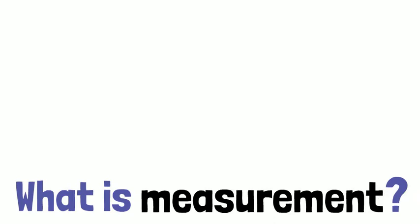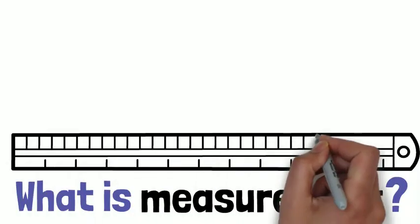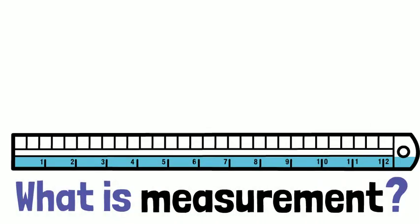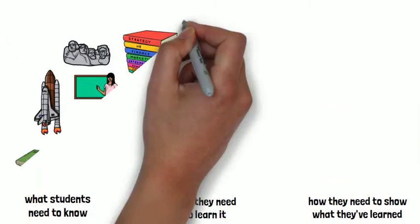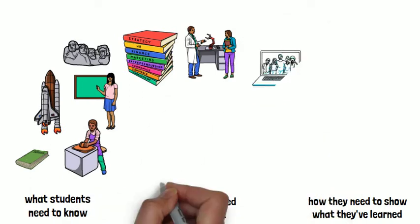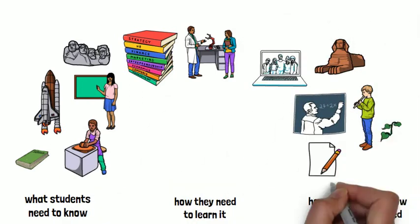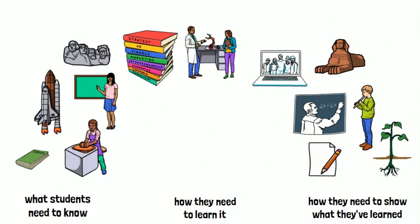What is measurement? Measurement is the science of analyzing or studying what students need to know, how they need to learn it, and how they need to show what they've learned. Everything from examining the classes that schools offer to the methods that teachers use in their classrooms can be examples of measurement.